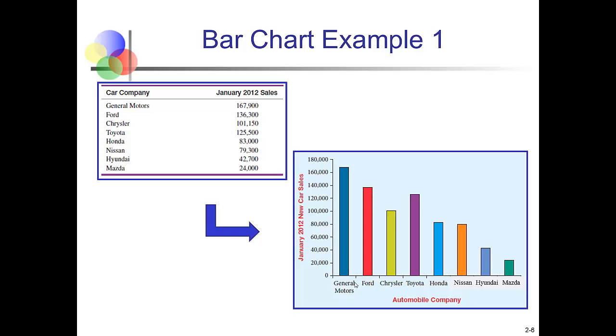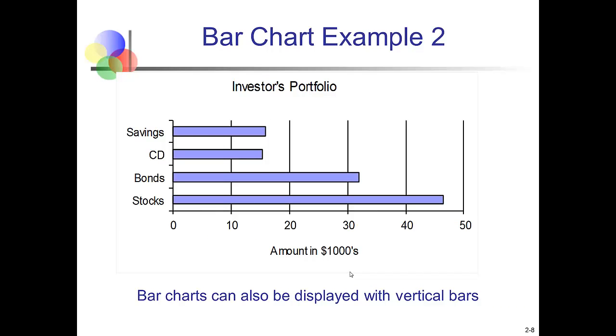A second example of a bar chart using horizontal bars. Suppose that we were interested in looking at an individual investor's portfolio. And that individual had about $47,000 in stocks, $32,000 in bonds, and so on. We could look at this graph and say this individual is invested in primarily risky investments. We know that stocks are risky relative to bonds, CDs, and savings. So this bar chart can be displayed vertically or horizontally.